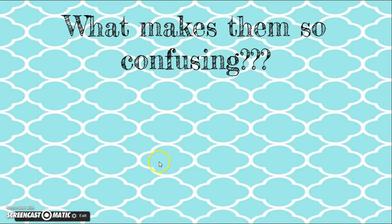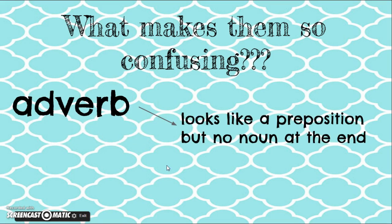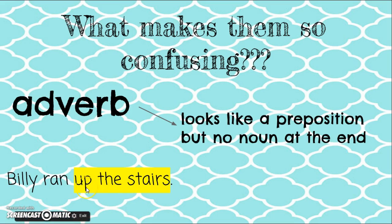So what makes them so confusing? Lots of people have trouble identifying them in sentences because there's a lot of overlap. The first thing you might confuse a preposition with is an adverb. A prepositional phrase has to have a preposition and a noun, and it's allowed to have modifiers in the middle, so it's always going to be with a group of words. An adverb, however, is just by itself. It might look like a preposition because it's one of the words you memorized on your list, but there's no noun at the end. Take 'up,' for example.